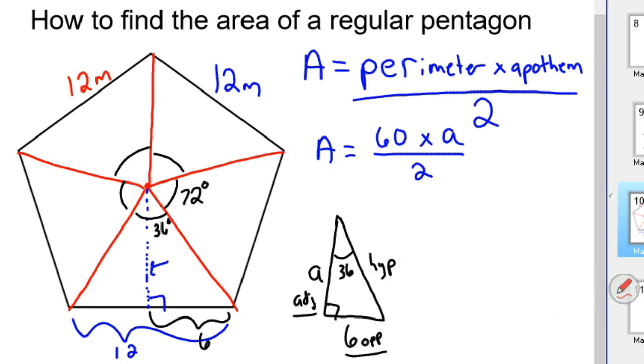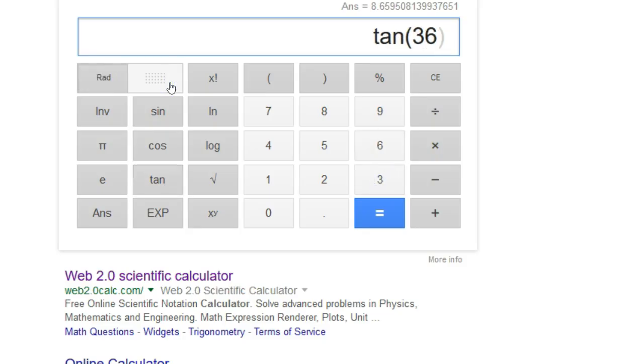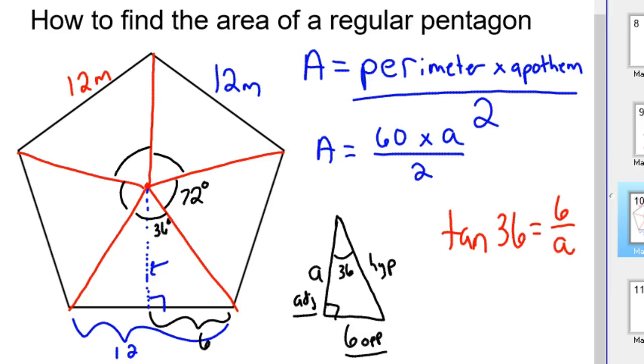So tangent 36 degrees is equal to opposite over adjacent, which is 6 over A. So I always like to use the Google calculator. So we're going to go tangent 36 degrees. Make sure that's degrees. Make sure you convert that to degrees first. In this particular case, we're not messing with radians yet. So tangent 36 is 0.7265. And we'll just round that. We'll keep that 0.7265.